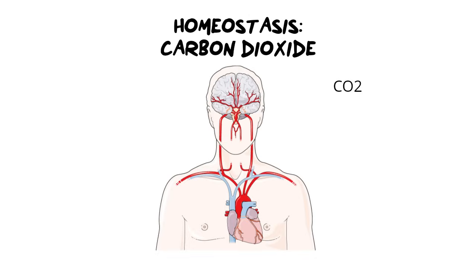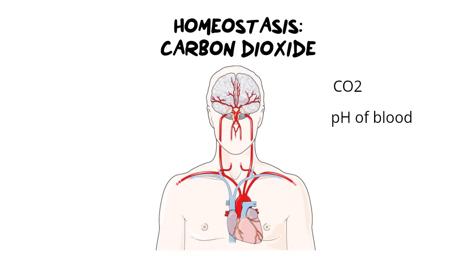Something that goes along with regulating carbon dioxide is the function that CO2 also plays in maintaining the pH of your blood. We need to maintain the pH of our blood because if we don't we run the risk of denaturing our enzymes. So when we are asked about the role that carbon dioxide plays in maintaining homeostasis and maintaining the pH of the blood, we have to talk about them both at the same time.